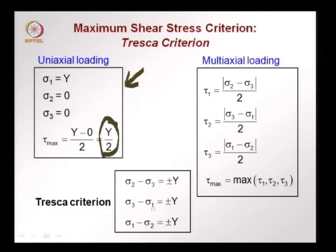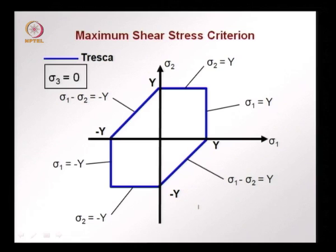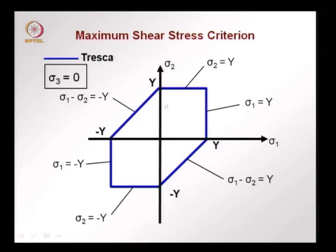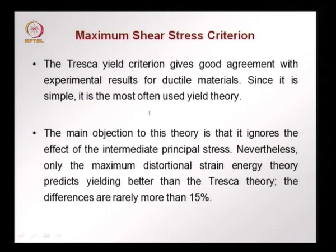Linking these ideas, the Tresca criterion states that failure will occur if any one of these conditions is satisfied: σ2 − σ3 = ±y, σ3 − σ1 = ±y, or σ1 − σ2 = ±y. This is represented by the Tresca yield surface, again for σ3 = 0, a plane stress situation. This surface comes from σ2 = y, σ1 = y, and σ1 − σ2 = y. As long as the stress state is inside the yield surface failure has not occurred. The Tresca criterion gives good agreement with experimental results for most ductile materials, and it is very simple and therefore the most often used yield theory. Its limitation is that it ignores the effect of the intermediate principal stress.